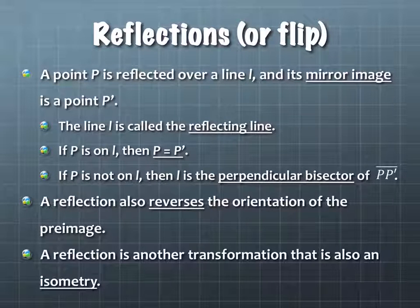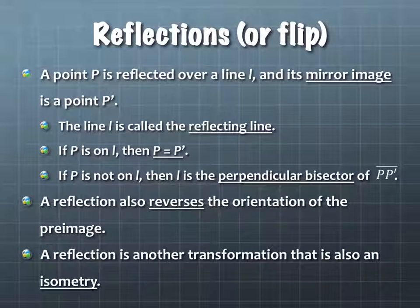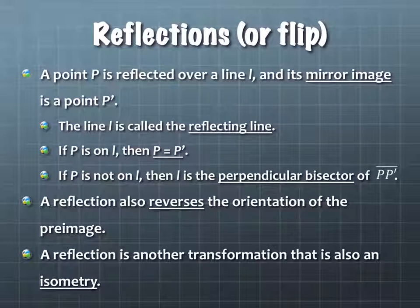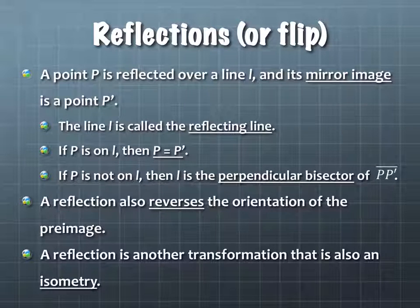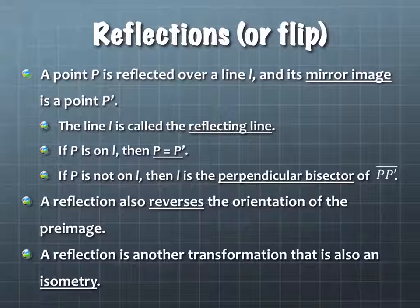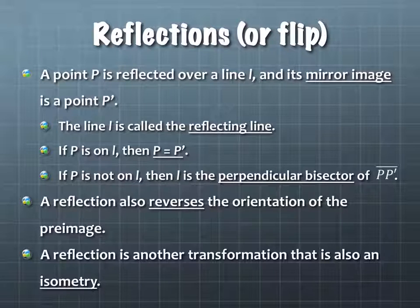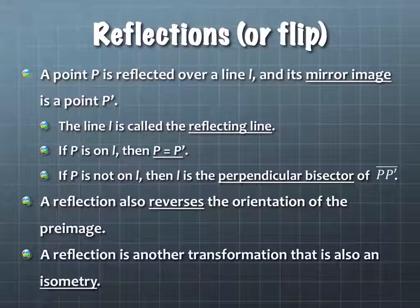A reflection will reverse the orientation, and it is another example of an isometry. Does anybody remember what isometry was from last time? It maintains distance or length. And it also, visually speaking, means that the angles stay the same and the side lengths stay the same. The image is essentially the same image. If somehow we were able to pick up the two images and shift and adjust them, they would line up perfectly. They're congruent.